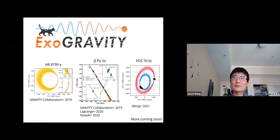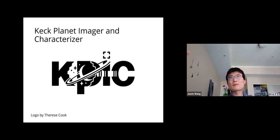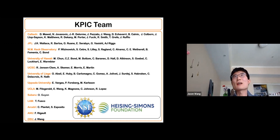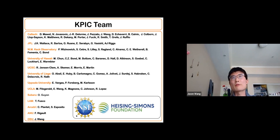For the second half of this talk I'll focus on KPIC—the Keck Planet Imager and Characterizer. Though small physically, it has a large international collaboration. It's led at Caltech by Dimitri Mawet and Nemanja Jovanovic, with collaborators from across the world and main funding provided by NSF and the Heising-Simons Foundation.